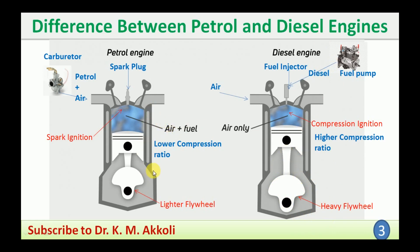Petrol engines are used for smaller vehicles such as motorcycles, mopeds, and small boats. Diesel engines are used for heavy vehicles such as trucks, cars, and buses. The thermal efficiency is lower for the petrol engine and higher for the diesel engine.